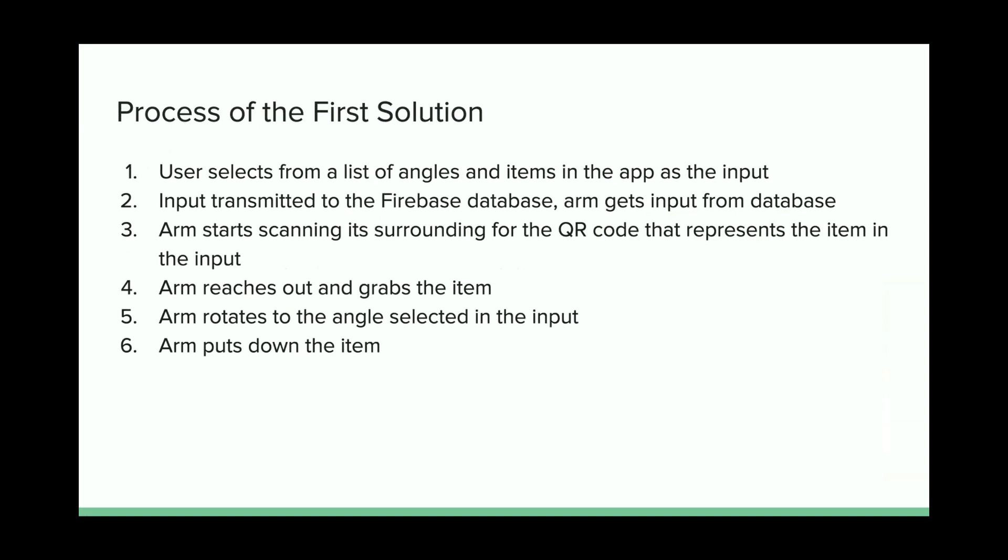The process is that the user selects from a list of angles and items in the app as input. Input is transmitted to the Firebase database, and the arm gets input from the database using the internet. The arm starts scanning the surroundings for the QR code representing the item in the input. The arm reaches out and grabs the item, lifts the item up, rotates to the angle selected in the input, and then puts down the item.